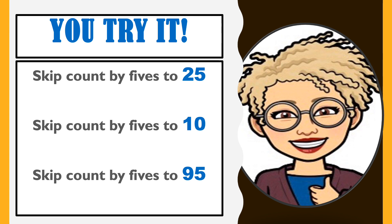The last one asks us to skip count by fives to 95. 5, 10, 15, 20, 25, 30, 35, 40, 45, 50, 55, 60, 65, 70, 75, 80, 85, 90, 95. I hope you and your partner, or you all by yourself, got it right.